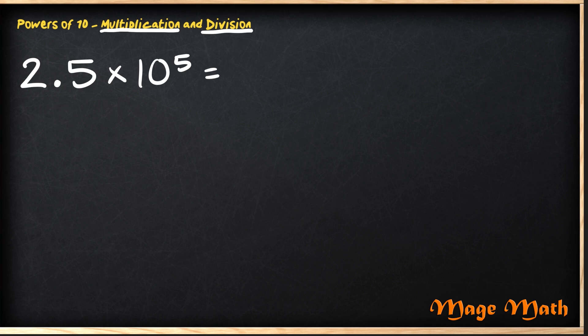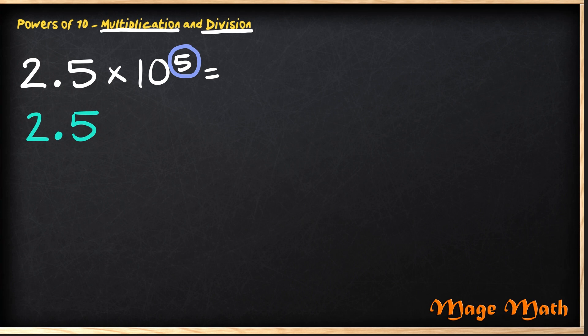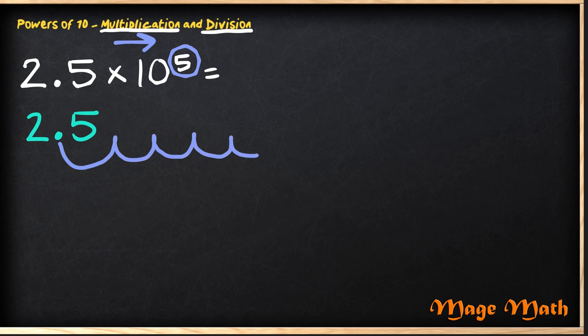The first problem we'll look at is two and five tenths times ten to the fifth power. So the first step is to rewrite our decimal — two and five tenths. Then what I want to do is move our decimal based on the power. We know that the exponent is five, so we're going to move our decimal point five places to the right. Remember, when we multiply we go to the right because the number is getting bigger. So let's move it: one, two, three, four, five. Our new decimal point now goes here.